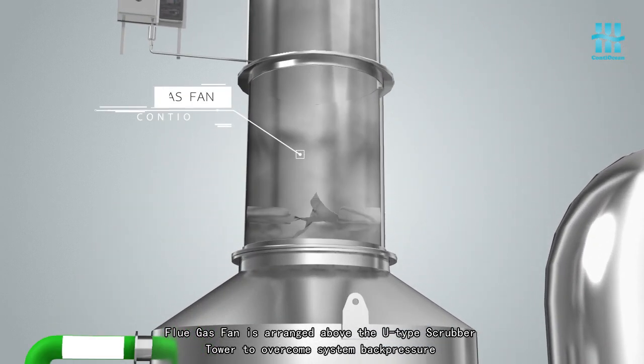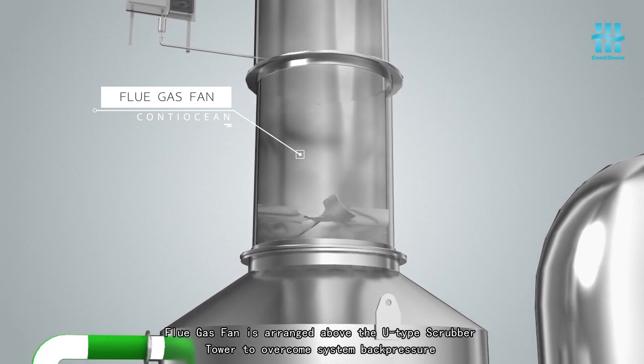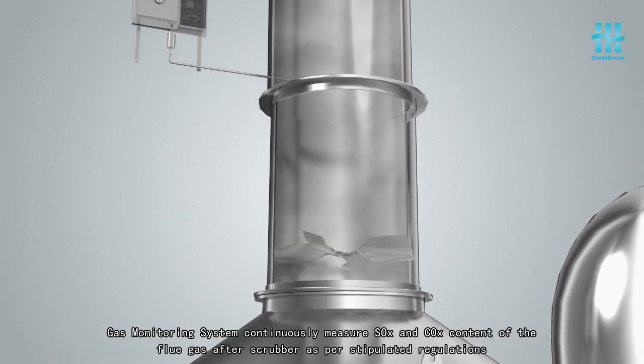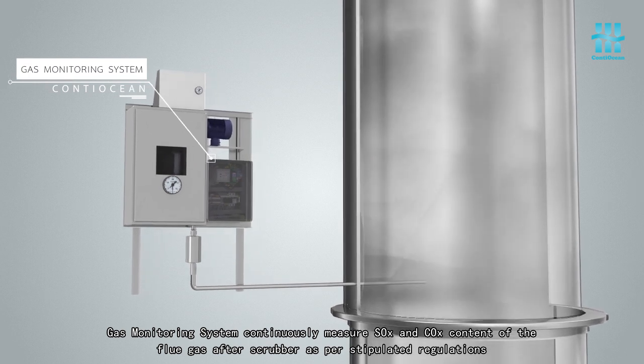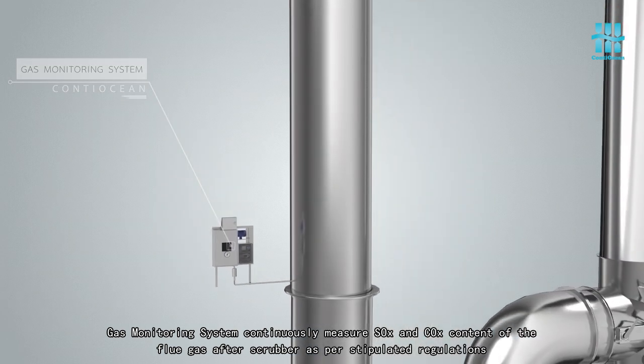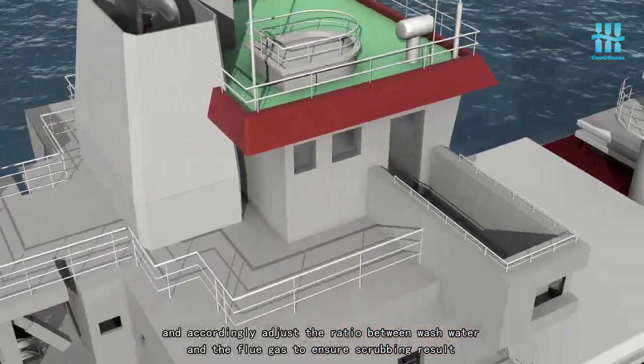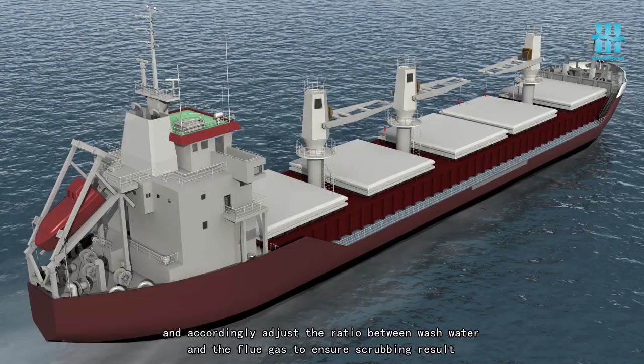Flue gas fan is arranged above the U-type scrubber tower to overcome system back pressure. Flue gas monitoring system can continuously measure SOx and COx content of the flue gas after scrubber as per stipulated regulations and accordingly adjusts the ratio between wash water and the flue gas to ensure scrubbing result.